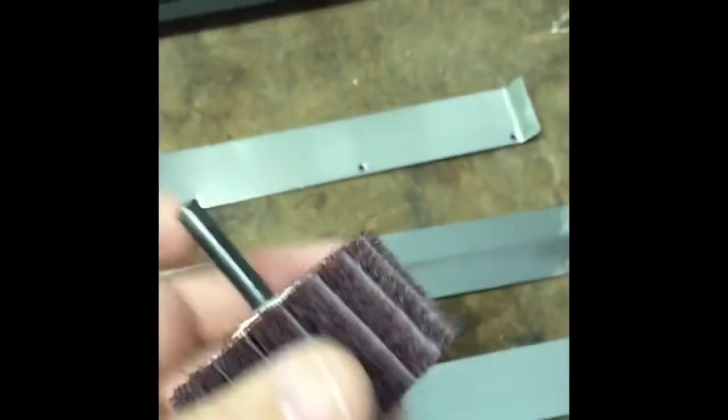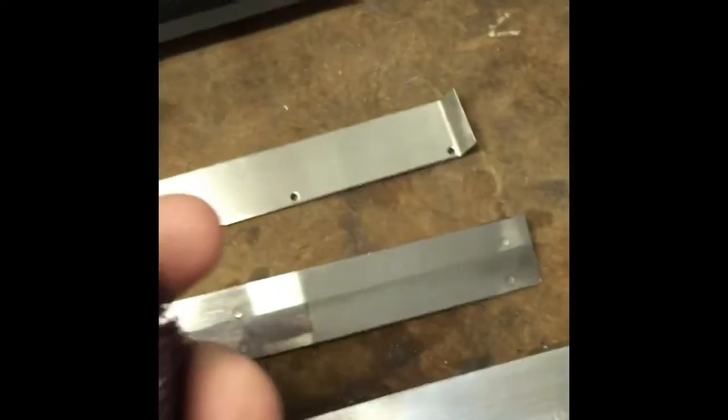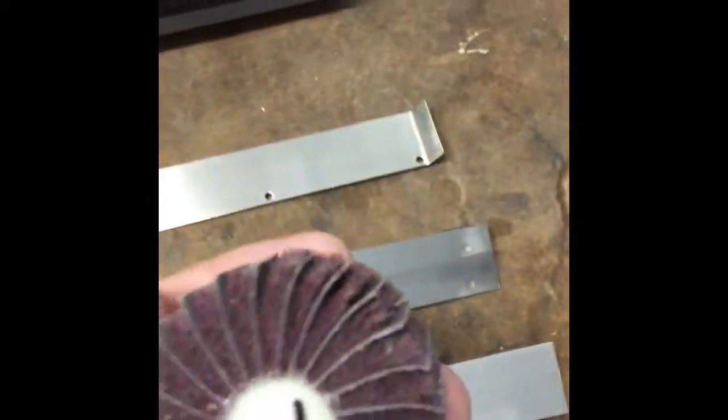I went to Amazon and got these 3M scotch-brite sanding wheels. This one's a medium, and I bought a medium and a fine. They really do a great job.